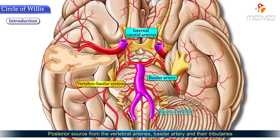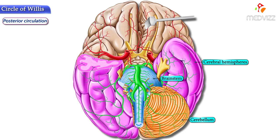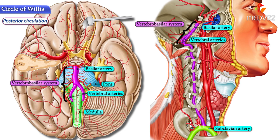Now let's take a look at the posterior circulation. This half of the circle provides the posterior circulation and mainly supplies structures like the cerebellum, brainstem, and posterior aspects of the cerebral hemispheres. The two vertebral arteries, originating from the subclavian artery, course upwards through the neck and ascend on the anterolateral aspect of the medulla to unite at the lower border of the pons, which is part of the brainstem, forming a single artery called the basilar artery, and by extension forming the vertebrobasilar system.